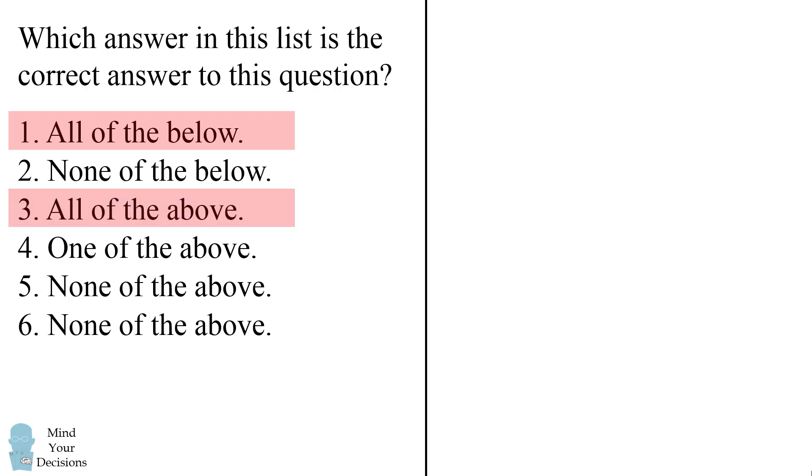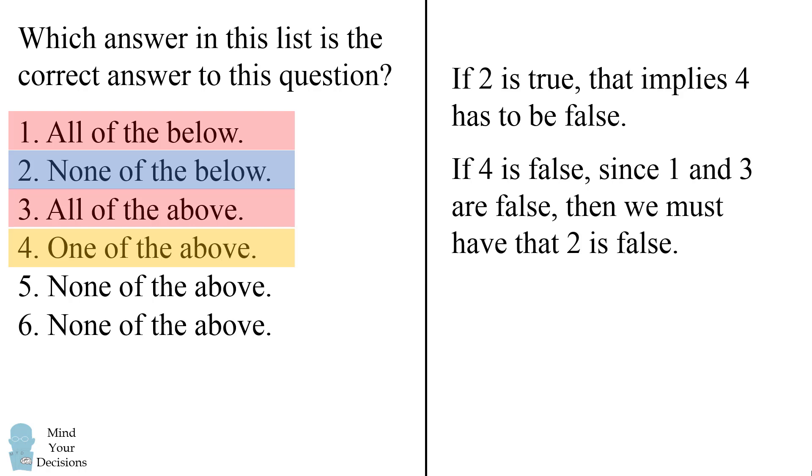Now let's go to statement 2. None of the below. If statement 2 is true, that implies statement 4 has to be false. 4 says that 1 of the above is true. So if 4 is false, that means none of the above can be true. So if 4 is false, since 1 and 3 are already known to be false, we must have that 2 is false. Hence we have that 2 is a self-contradictory statement and also cannot be true.